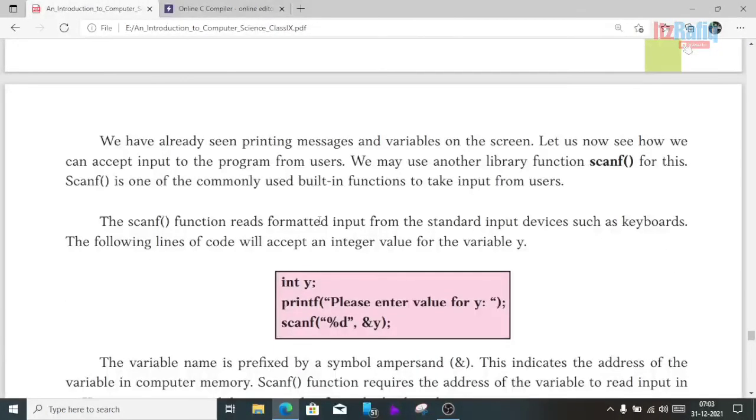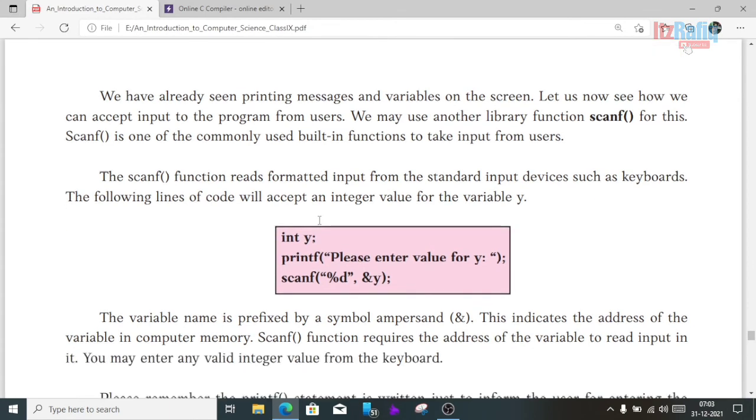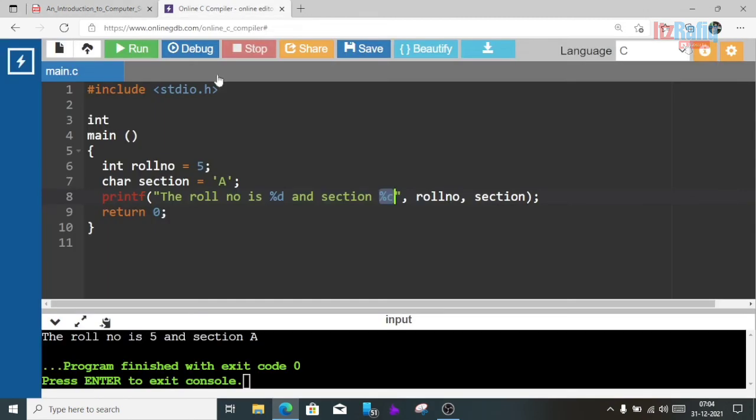We have already seen printing messages and variables on the screen. Now let's see how we can use scanf. What we do with printf statement is output print. But if we want to take input from the user, we use scanf. Scanf is a built-in library function which requires the header file stdio.h. stdio means standard input-output, h for header. We use this function scanf and printf, whose declarations are in this file, so we need to include this file.